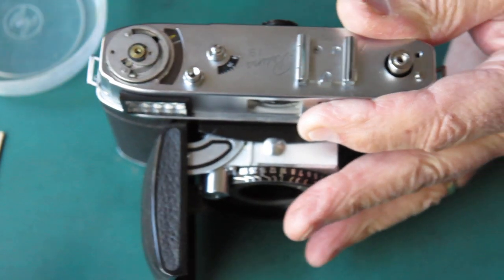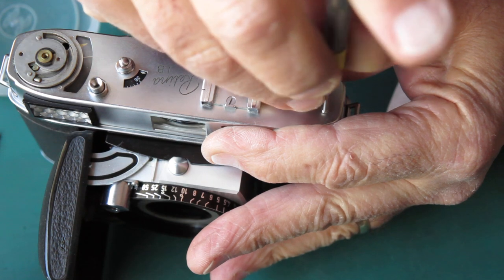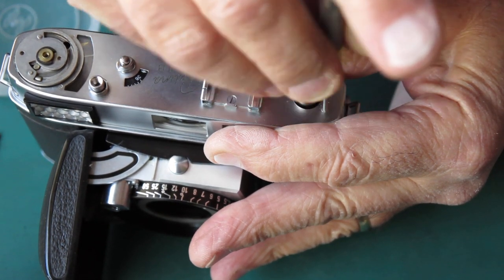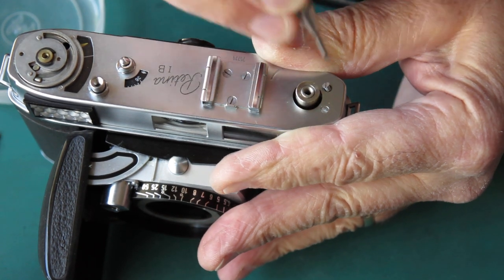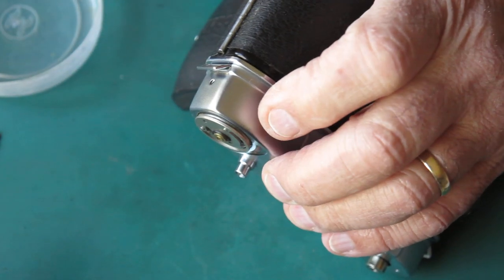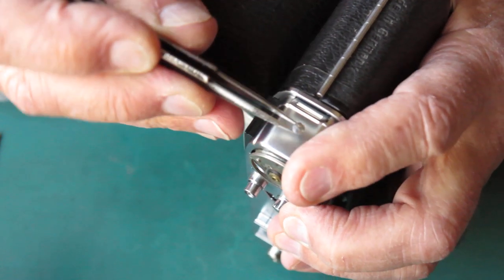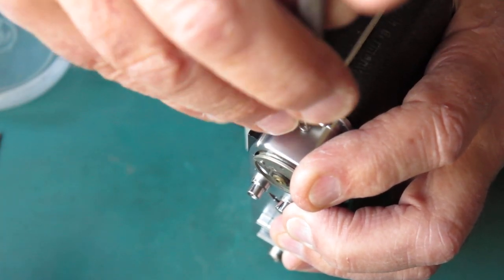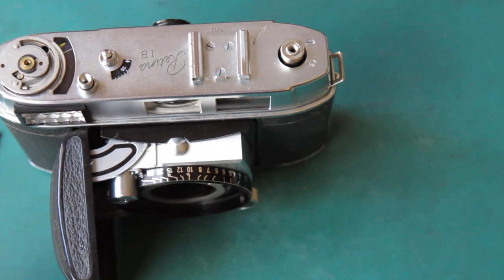Another go at putting this top cover on. That time looks more successful. Frame counter's moving nicely. Buttons move smoothly. Get two screws in on the top cover at this end. If you've done everything right, these are the two chrome plated screws. If you've done something wrong, one or both of them will be nickel plated because you've used the chrome screws up somewhere else.